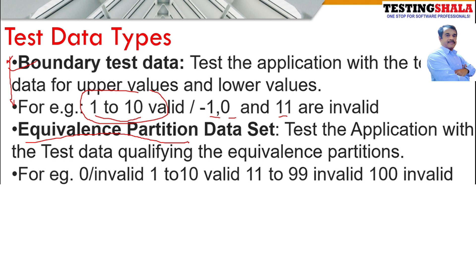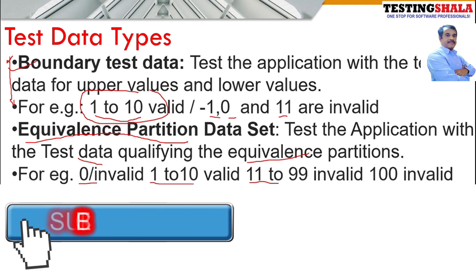We also have equivalence partitioning test data, where we test the application using data qualifying equivalence partitions. We put the test data into different partitions or buckets. In the same case — one to ten being valid — we put certain values under zero as invalid, numbers one to ten as valid, numbers eleven to ninety-nine as invalid, and one hundred as invalid (being a three-digit number).